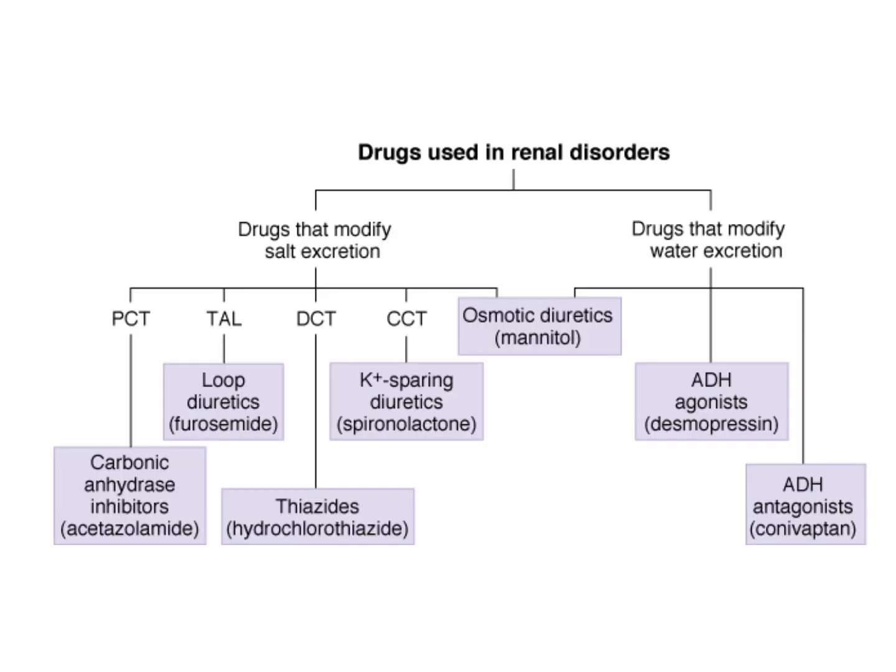The next group involves the carbonic anhydrase inhibitors, including acetazolamide, dorzolamide, and others. The last group is the osmotic diuretics, which involves just two drugs: mannitol and urea.